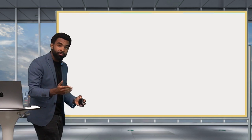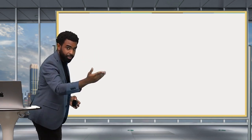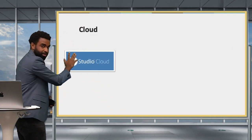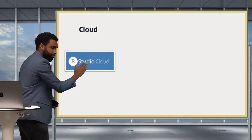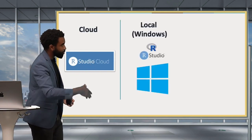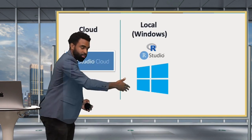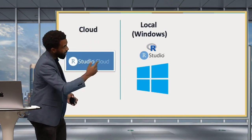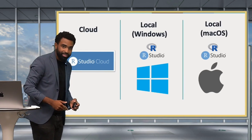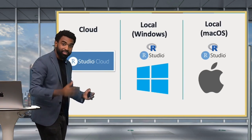The rest of the video is divided into three parts. First, I'll show you how to get set up on the cloud with RStudio.cloud. Then I'll show you how to install the software locally on a Windows computer. Then I'll show you how to install locally on Mac OS. So jump to the section that's relevant for you.